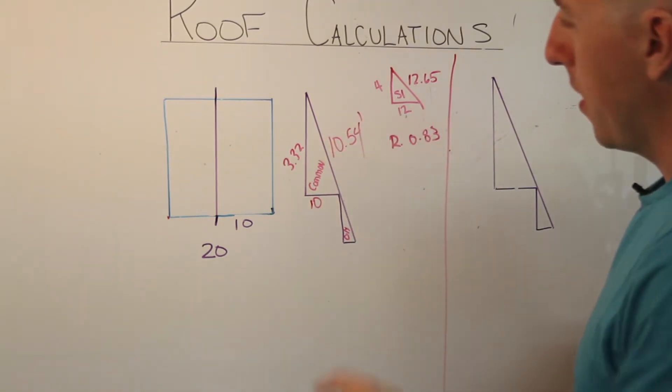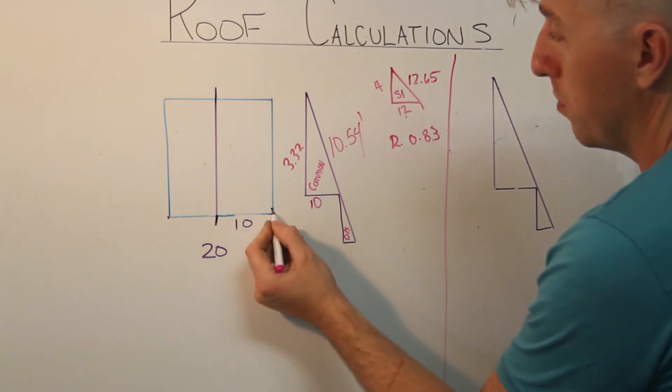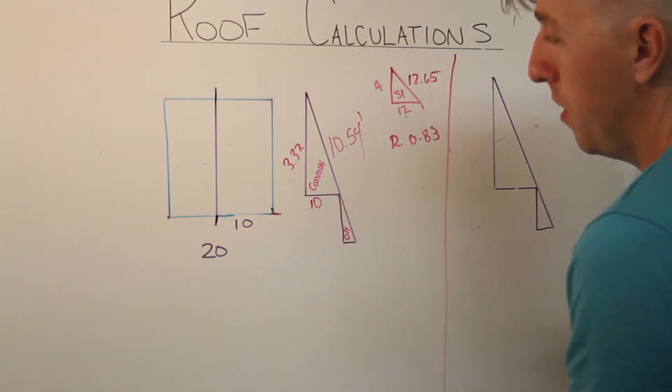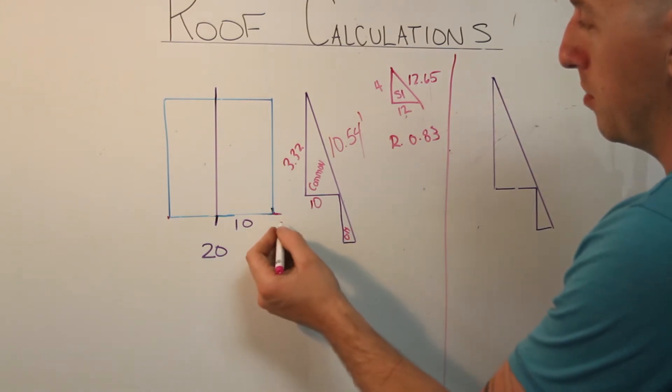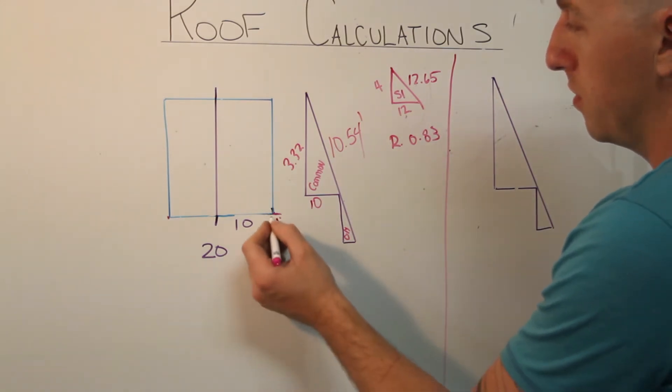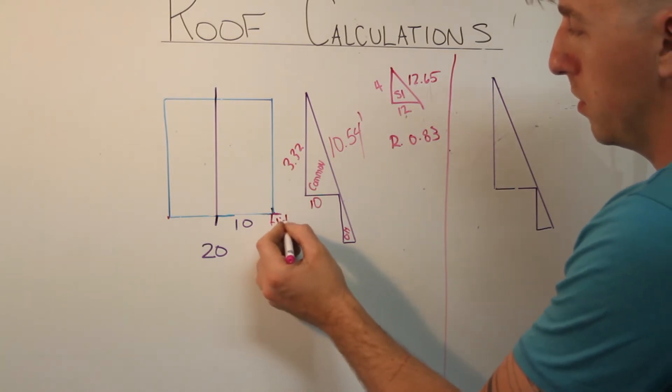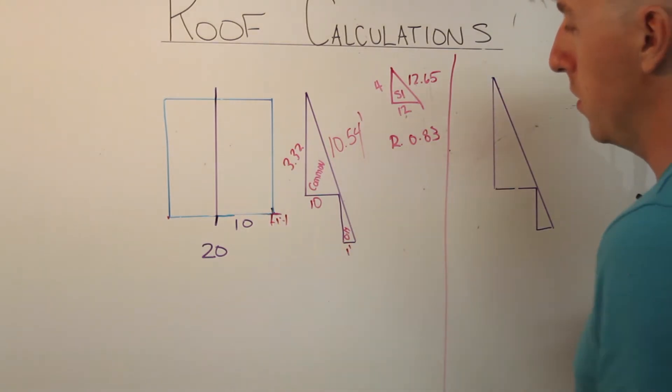Now we have to do the exact same thing with the overhang, which is going to be this little section in here. They'll specify on the drawings what the overhang is going to be. In this example, let's say that it's about one foot. One foot goes down here.